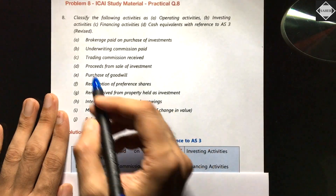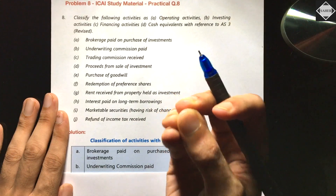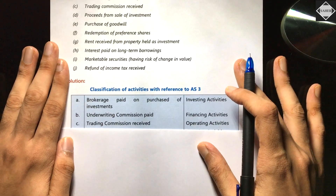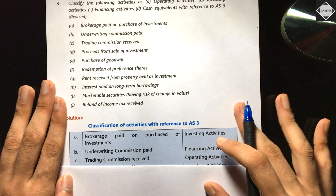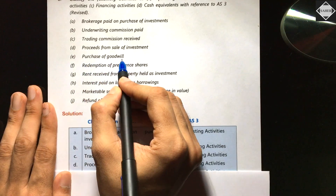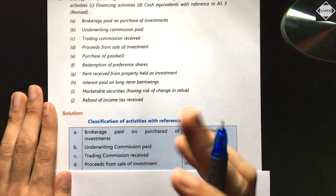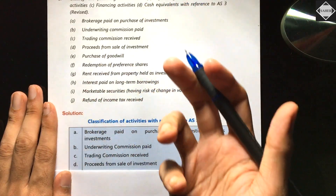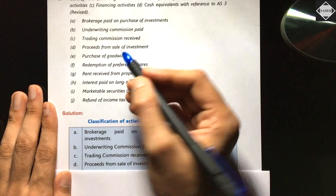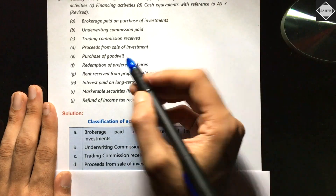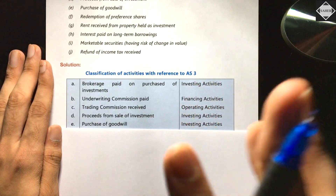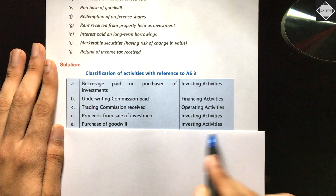Trading commission received is related to the main operations of the business — so it's an operating activity. Proceeds from sale of investment is an investing cash inflow. Purchase of goodwill arises when you acquire a business — you pay more than the net assets — so it's part of investing activity. Redemption of preference shares relates to capital and borrowings, so it comes under financing activity.